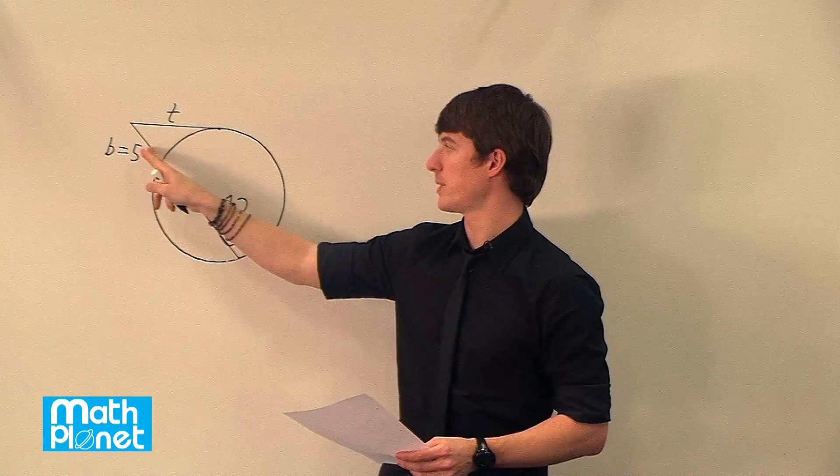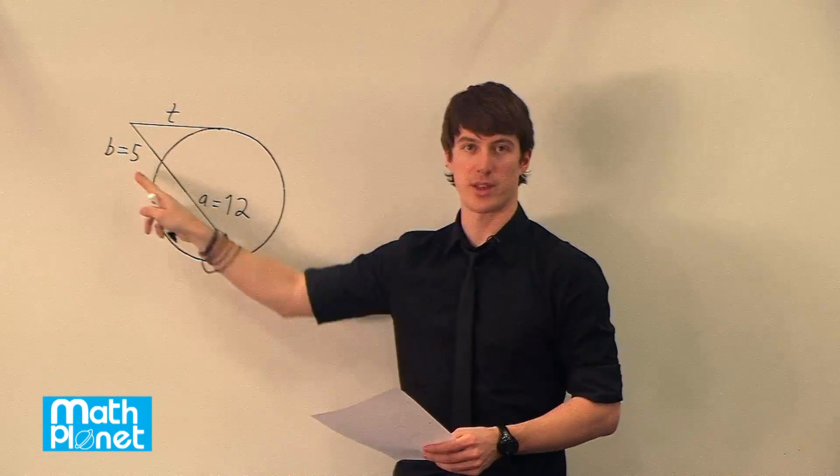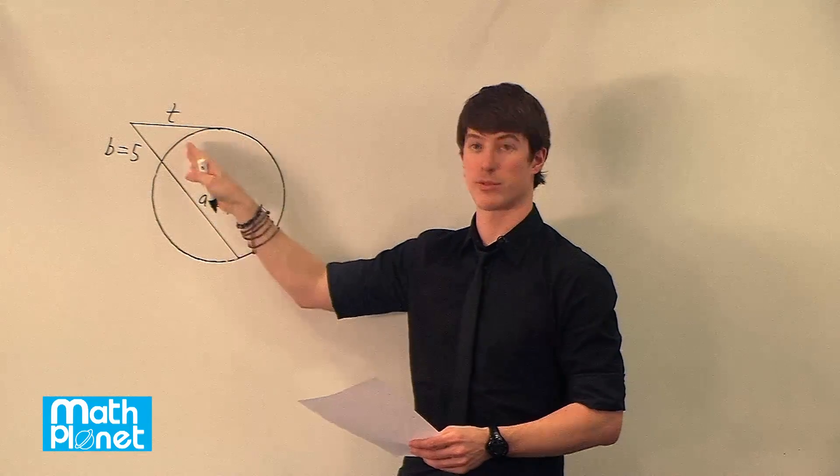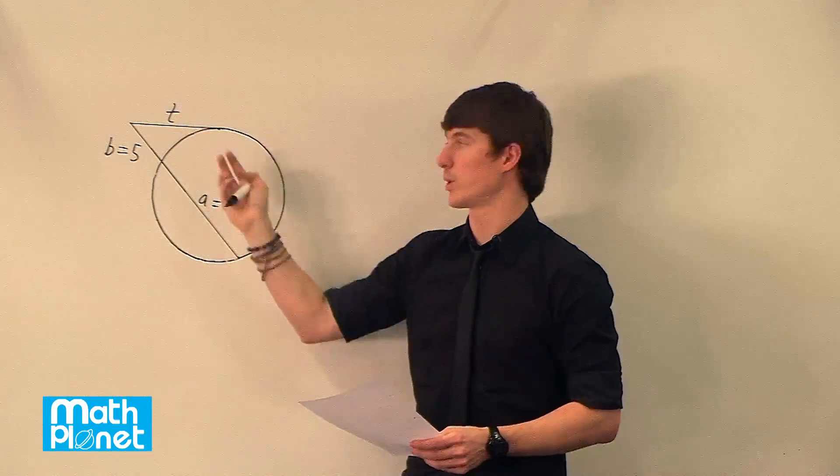So if we define this as b and this is a and we know these lengths, then we can find t. Of course we could do it in the reverse order as well if we're looking for b or a if we knew t.